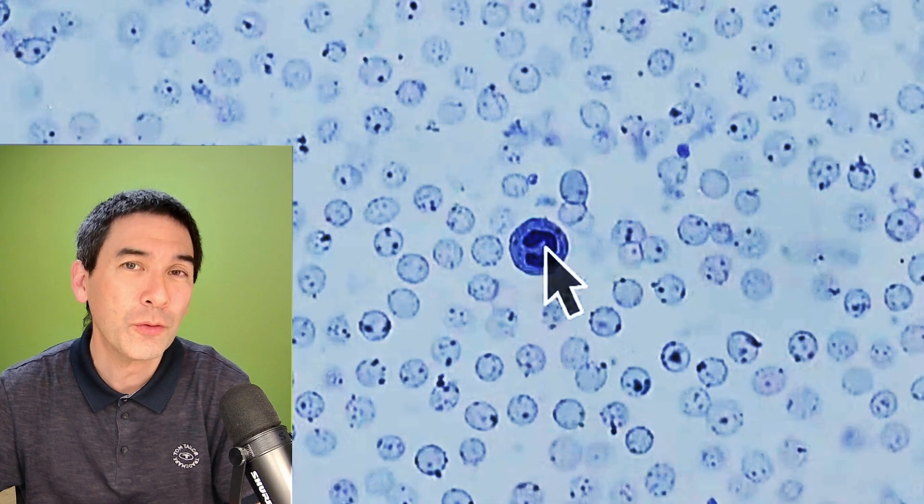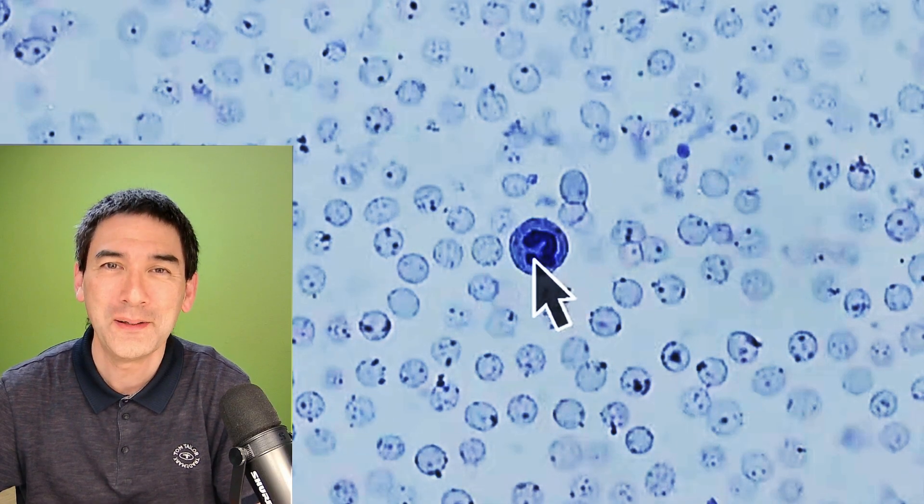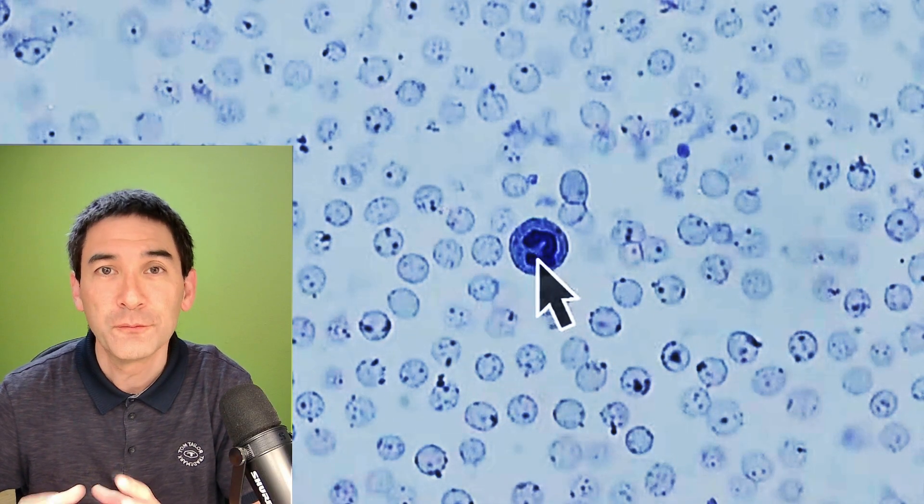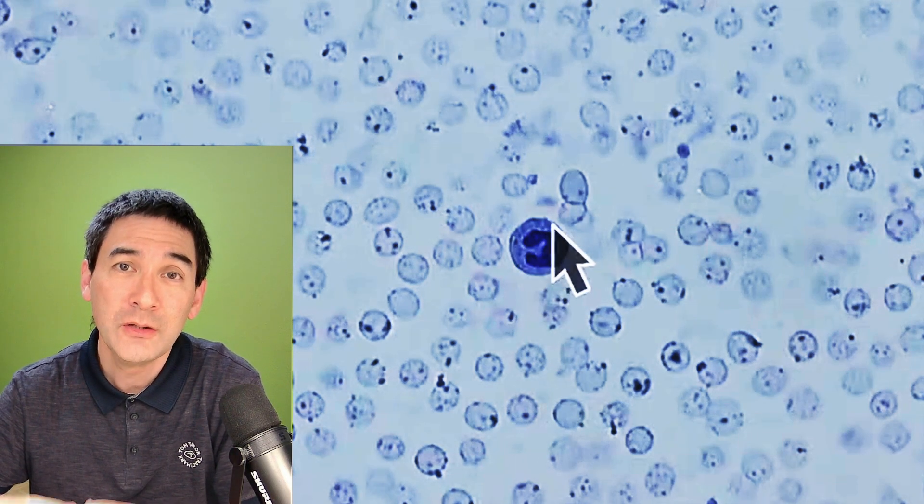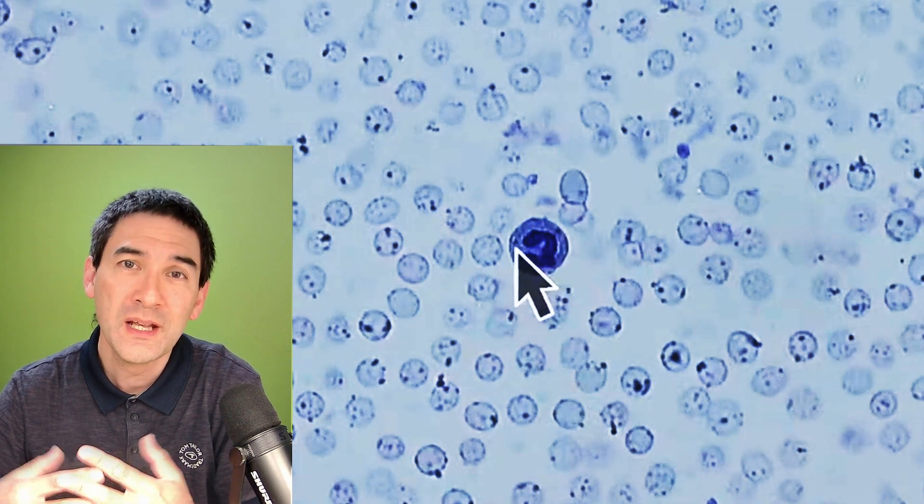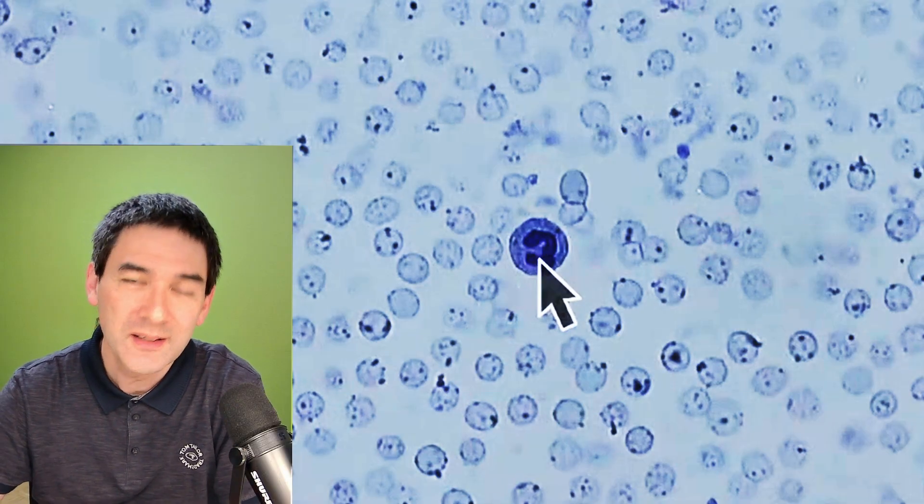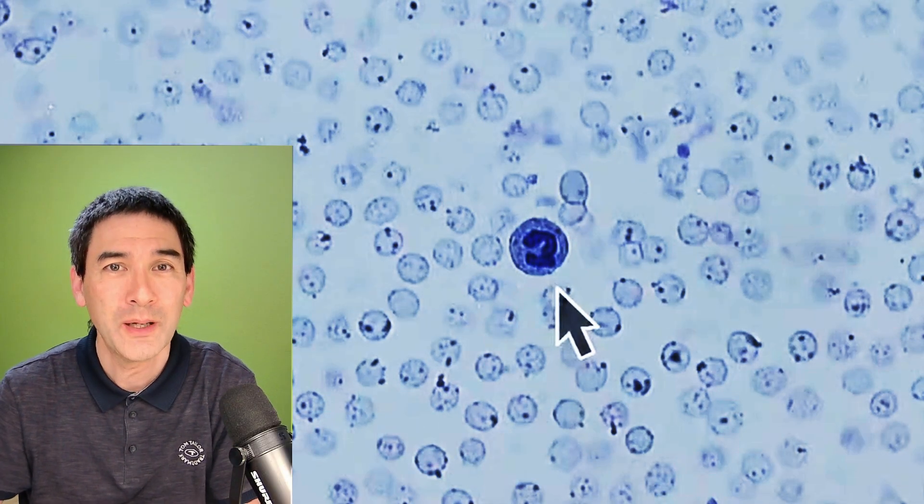You call this polymorph nucleated. I love these complex terms. Polymorph means different types of shapes and it's very typical for some white blood cells to have a nucleus that has these lobes and depending on the shape of the nucleus again you're able to categorize the white blood cells.